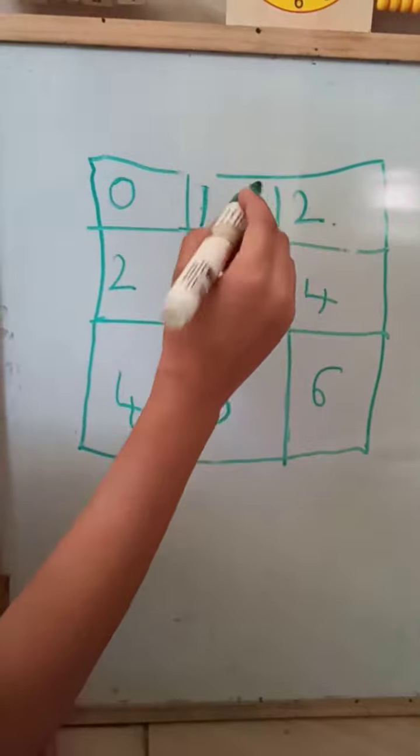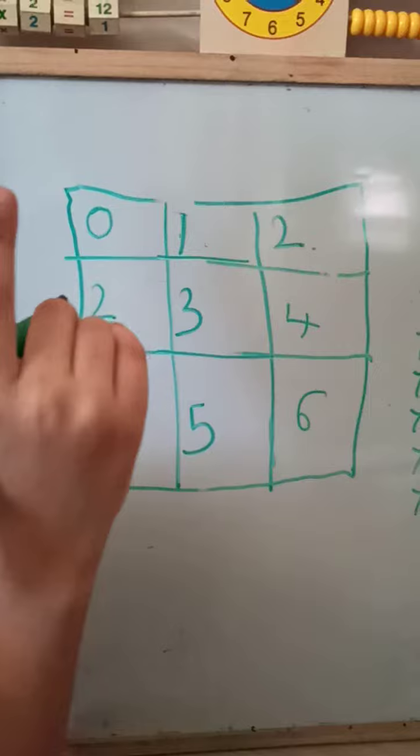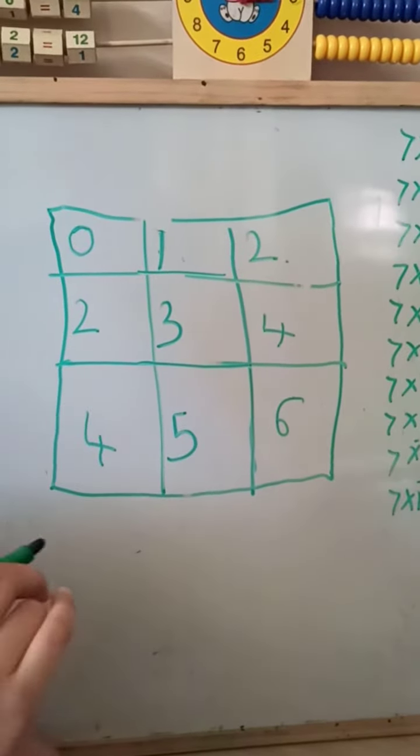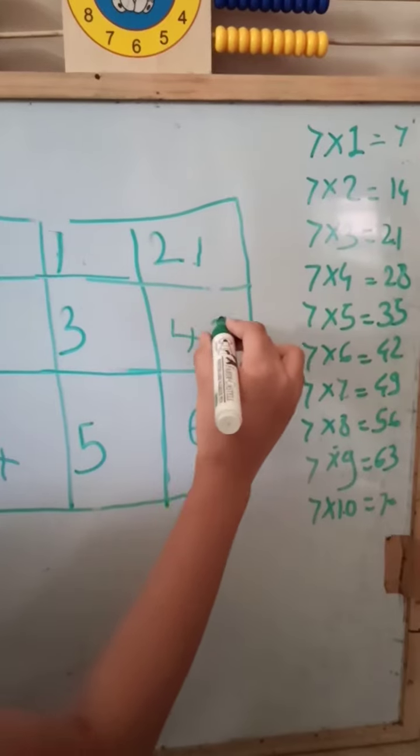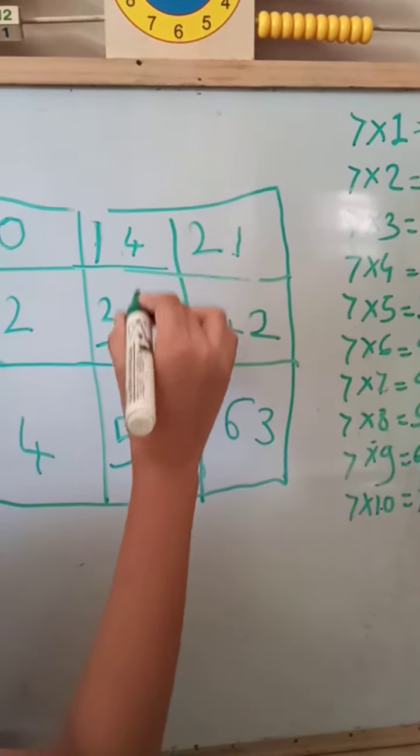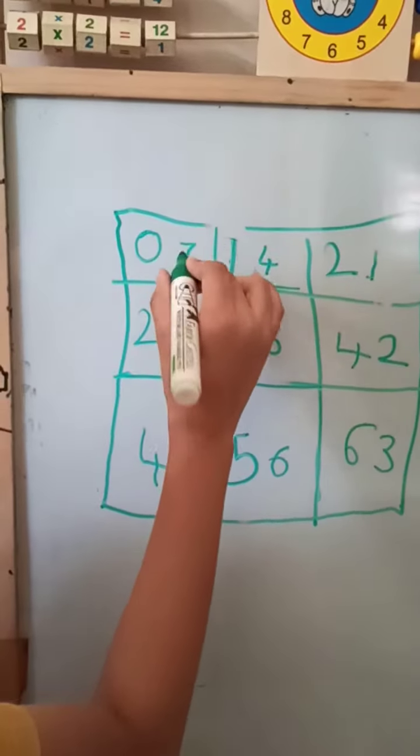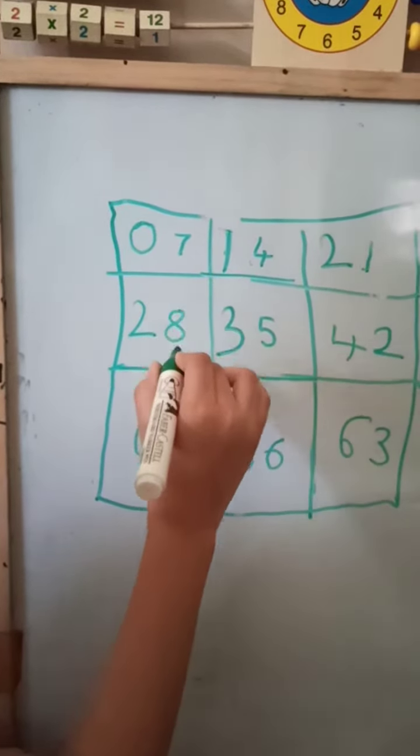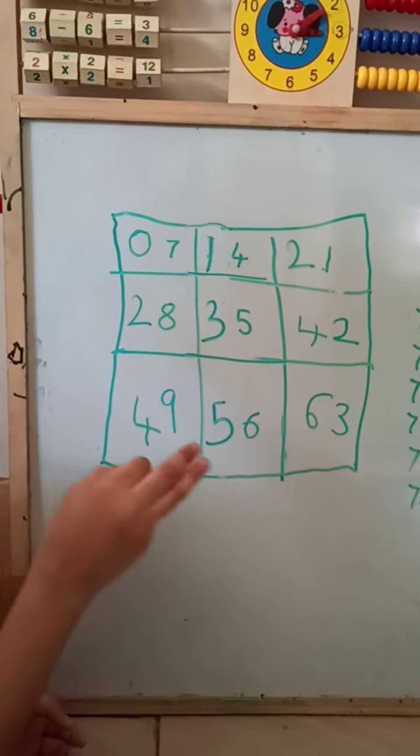See friends, I write last number in second row. Okay, now you have to write here one, two, three, four, five, six, seven, eight, nine.